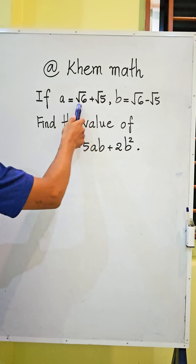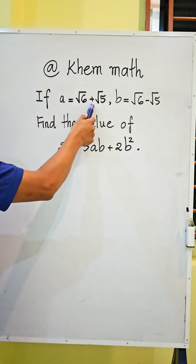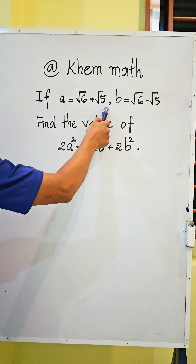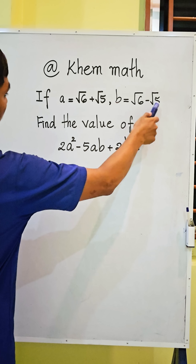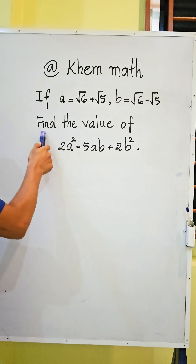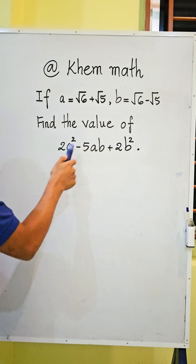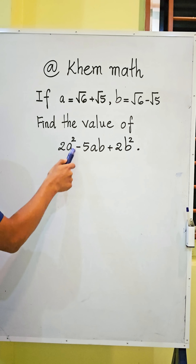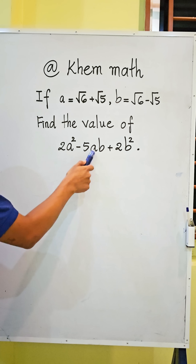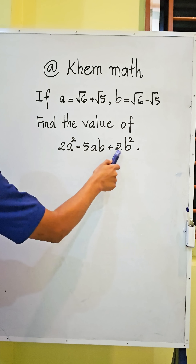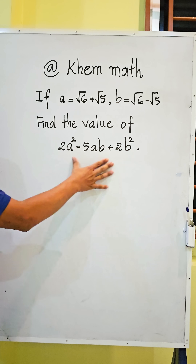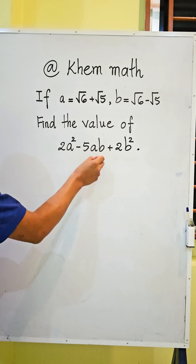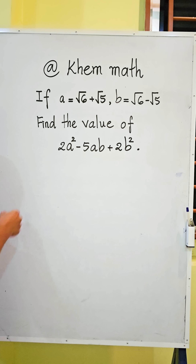If a equals square root 6 plus square root 5, b equals square root 6 minus square root 5, find the value of 2a squared minus 5ab plus 2b squared.